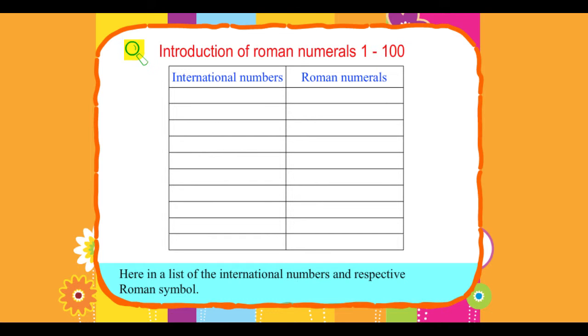International Numbers and Roman Numerals: 1 is I, 2 is II, 3 is III, 4 is IV, 5 is V.